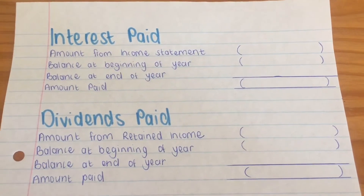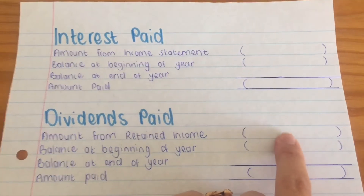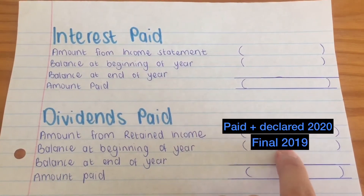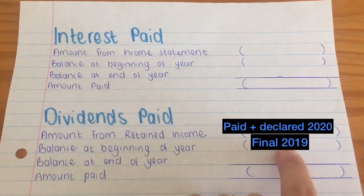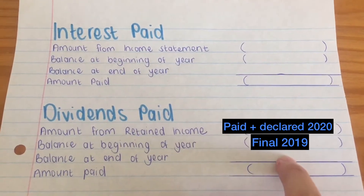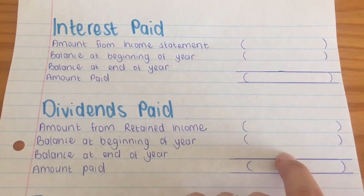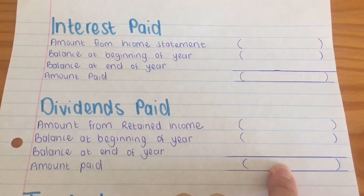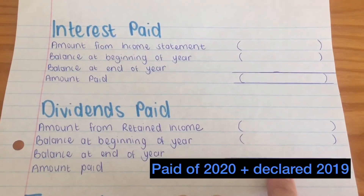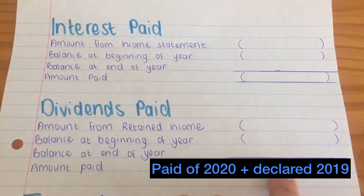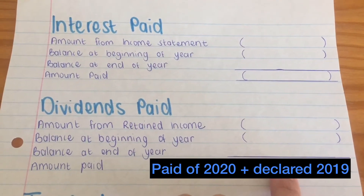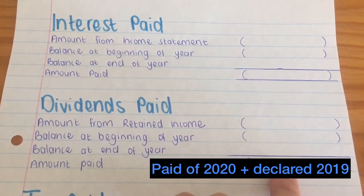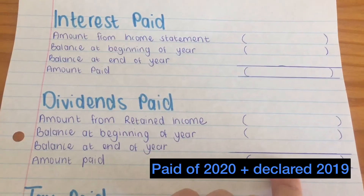Just to clarify: in there, we put the paid dividend and the final dividend. The final of last year and the final of the current year. The amounts actually paid are the interim dividend of this year and the final dividend of last year.